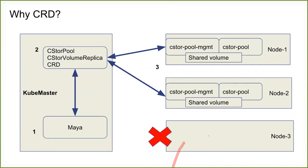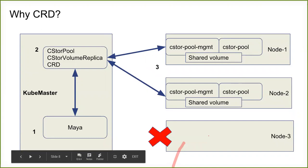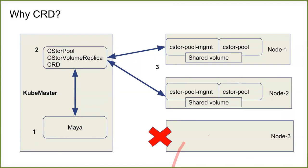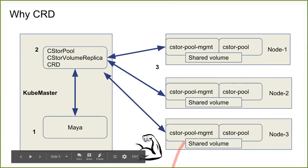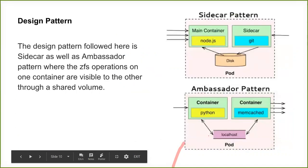We selected custom resources for this reason. Whenever a node is up, the Kubernetes cluster sends an event regarding the custom resource object to the CStore pool management application, which then handles it. This approach is not possible with REST or gRPC-based approaches. When the node is healthy and the container starts, it receives these events.